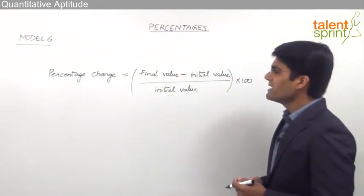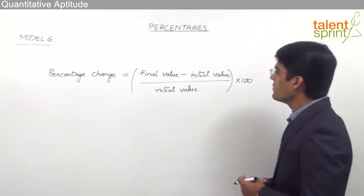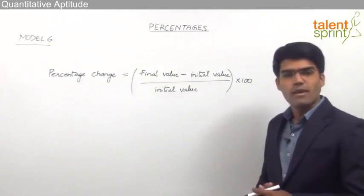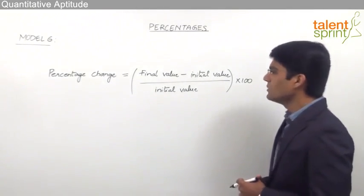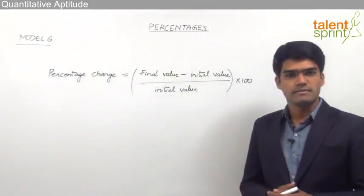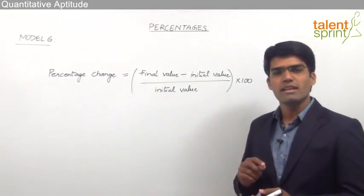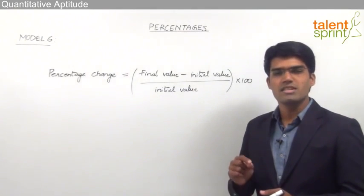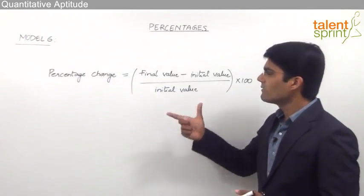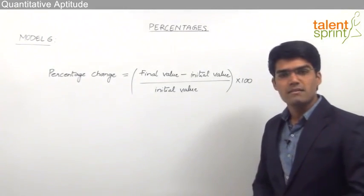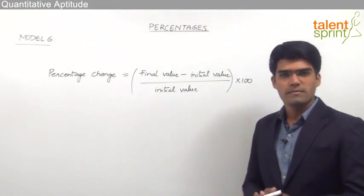Percentage change can always be taken as final value minus initial value, divided by initial value, into 100. So whenever we are supposed to find out the percentage change from one value to the other, we can always use: final value minus initial value, by initial value, into 100.